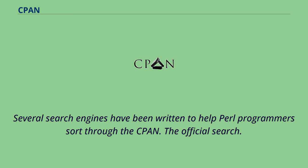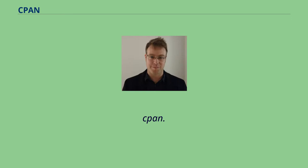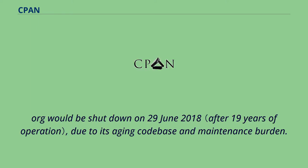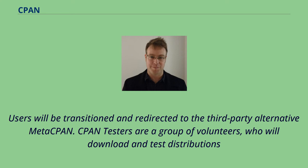Several search engines have been written to help Perl programmers sort through the CPAN. The official search.cpan.org includes textual search, a browsable index of modules, and extracted copies of all distributions currently on the CPAN. On May 16, 2018, the Perl Foundation announced that search.cpan.org would be shut down on June 29, 2018, due to its aging codebase and maintenance burden. Users will be transitioned and redirected to the third-party alternative MetaCPAN.